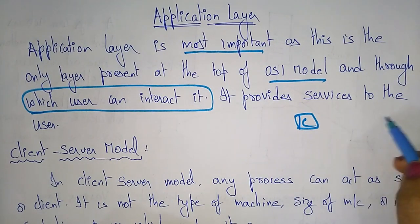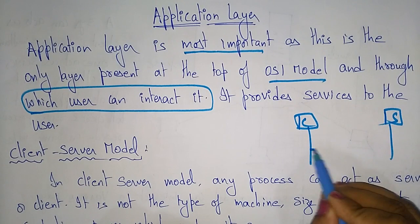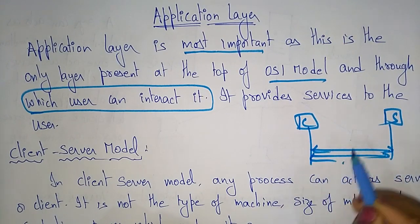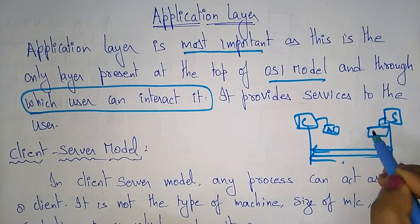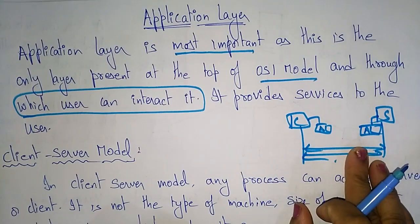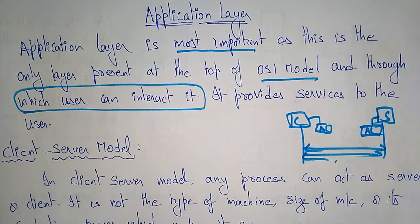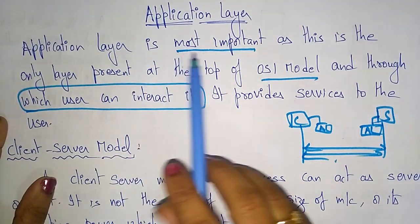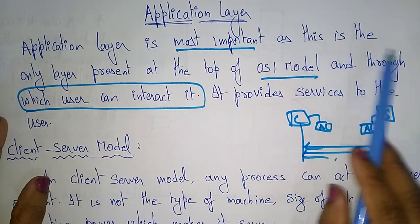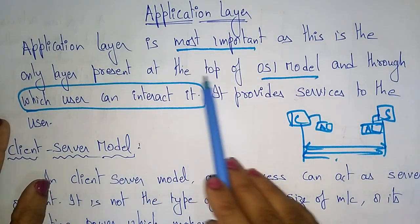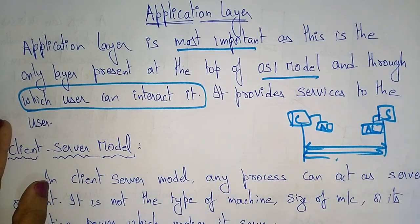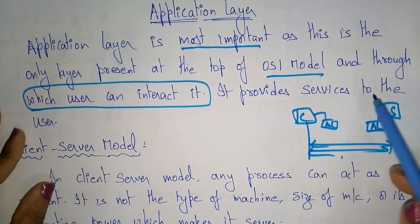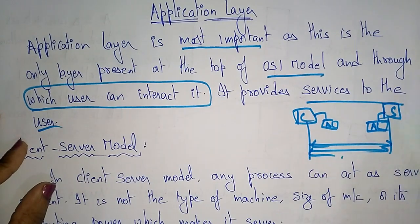Whatever system you are taking — the client and the server — if you want to make a communication between client and server, the client first has to interact with the application layer, and the server also has to interact with the application layer. The application layer provides service to the user.